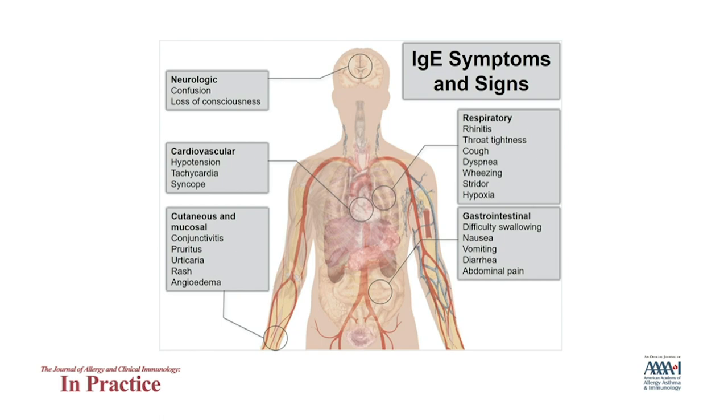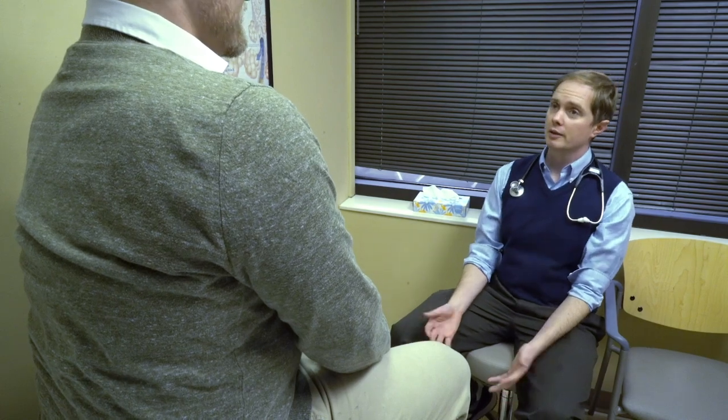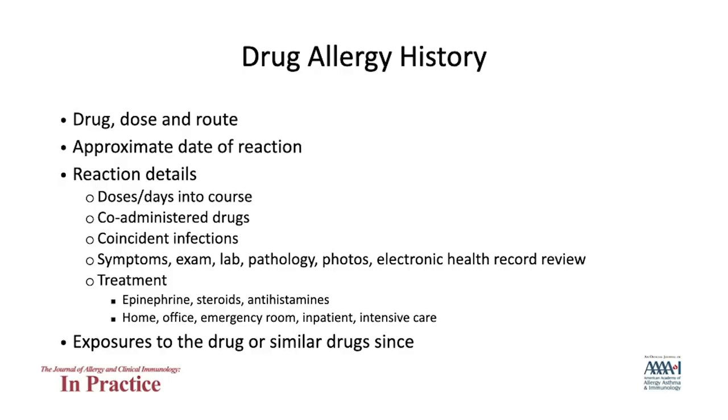The first step in evaluation is confirmation of the drug allergy history. The history is an essential step to identify what type and sequence of tests are needed to investigate the reported drug allergy and what conclusions will be drawn from the tests. Important drug allergy history items include details related to the drug such as dose, duration, indication, and when the reaction took place.